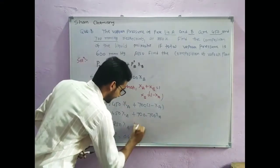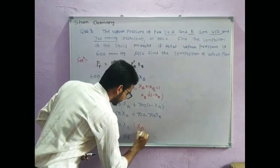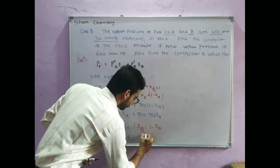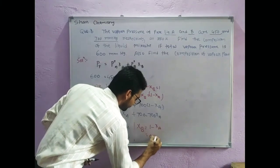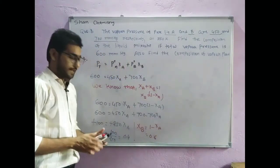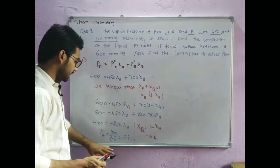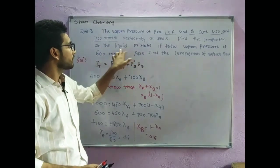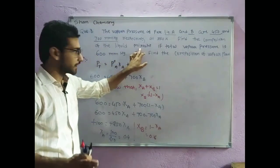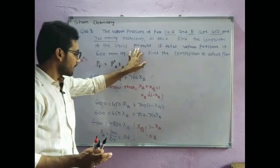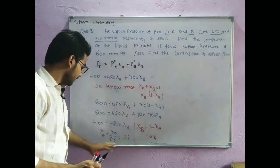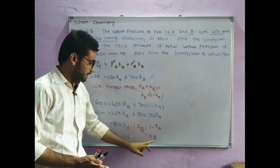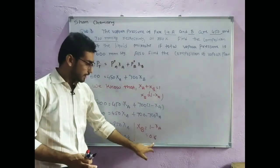So the value of X_A is 0.4. Now, what is the value of X_B? X_B equals 1 minus X_A, so its value is 0.6. From this it is clear that the mole fraction of the liquid mixture for X_A is 0.4 and for X_B is 0.6.